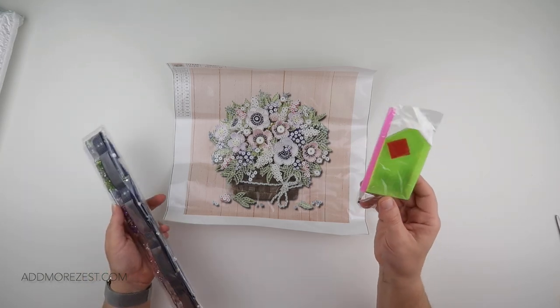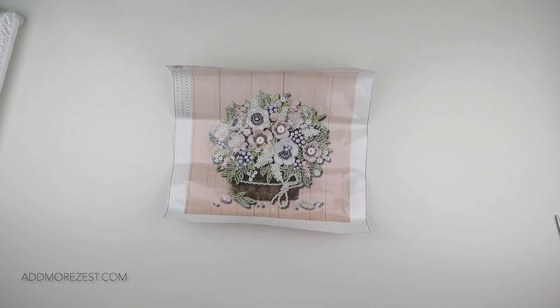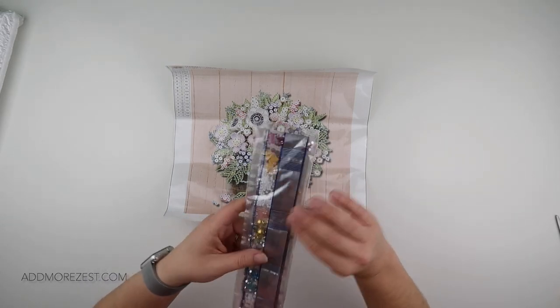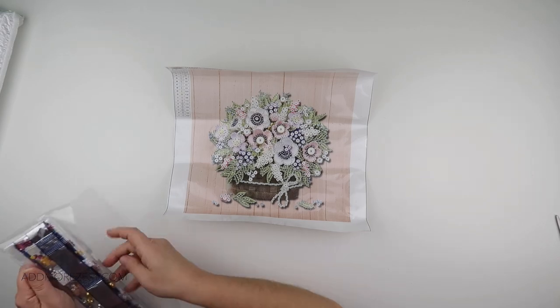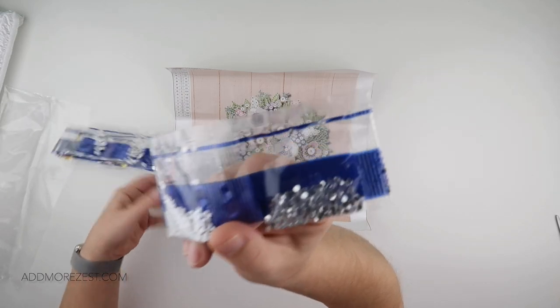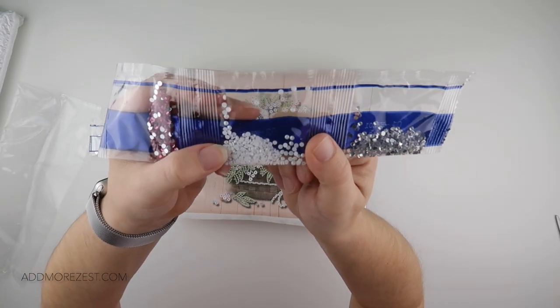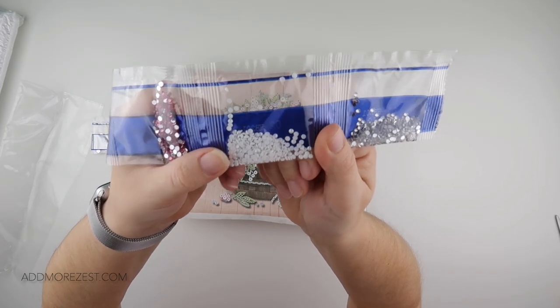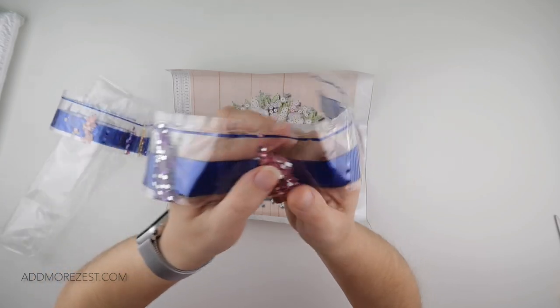It does come with a toolkit, boat wax pen. And then to show you the diamonds that they come with, so we have number one they class as silver. Then we have the 5200 with an AB coating, so white with an AB.